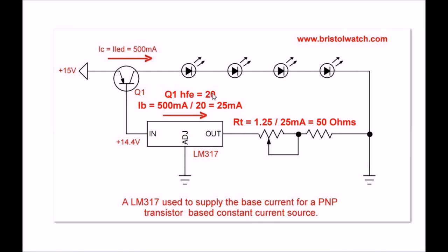With an HFE of 20 to get the base current from base to emitter, we would have to divide 500 milliamps by 20 and that's 25 milliamps. So I have 25 milliamps moving through the emitter base circuit of Q1.